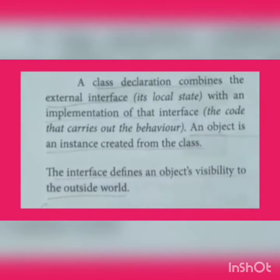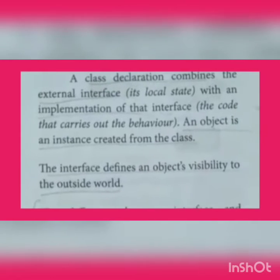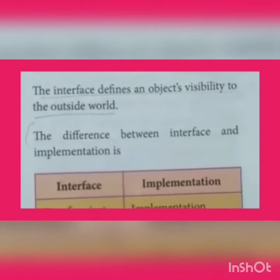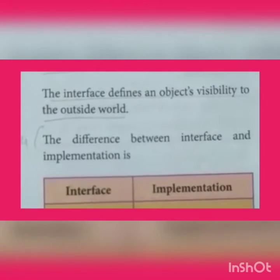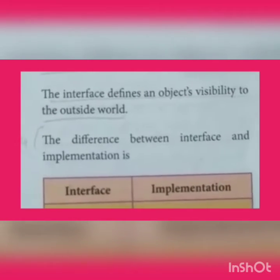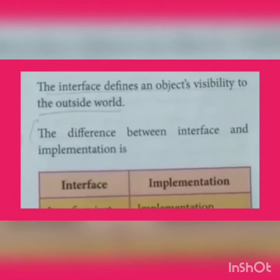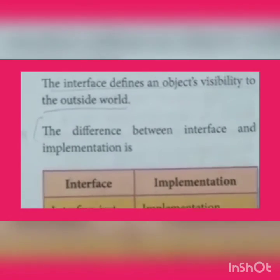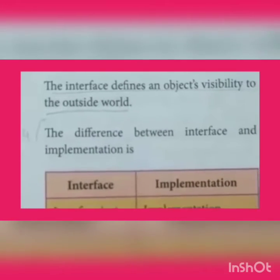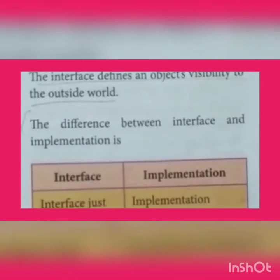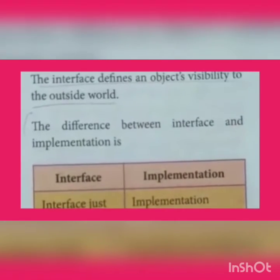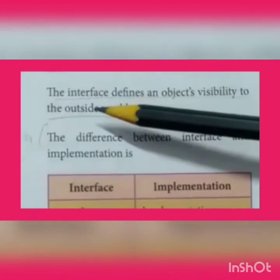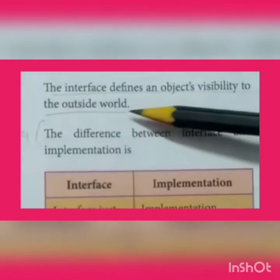Take the tubelight example — just defining the light is not going to make it glow. Without electricity, the object is of no use. We should have the interface, that is, the light and switch, so that we can implement an object. That's why the interface defines an object's visibility to the outside world.